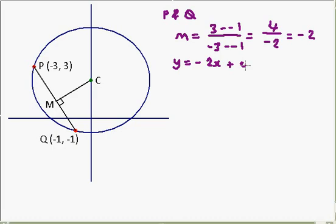So, the equation is Y equals minus 2X plus C. We don't know what that C is. So let's substitute in Q, minus 1, minus 1, because that would be the easiest one. So, Y is minus 1. X is minus 1, so we get minus 2 times minus 1 is 2, plus C. So, C must be equal to minus 3. So, the equation of the line that joins P and Q is Y equals minus 2X minus 3.